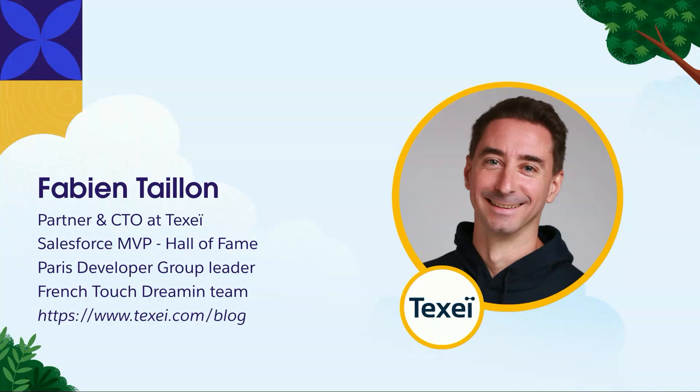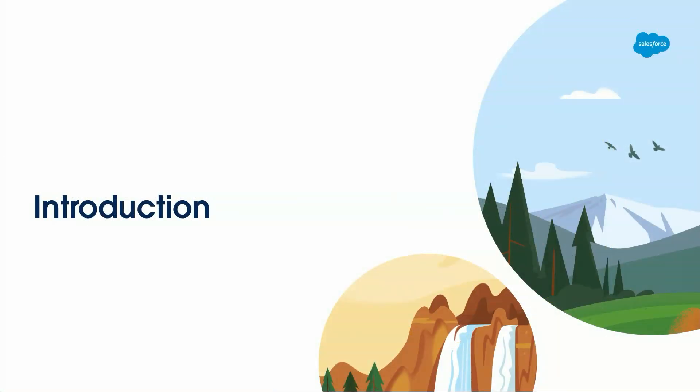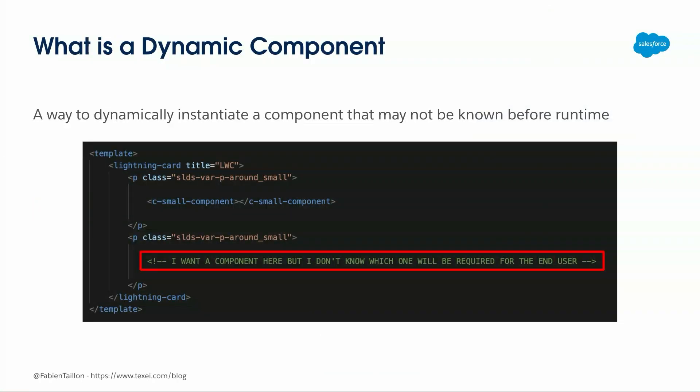We also have a blog post if you want to check out. So, what is a Dynamic Component? It's a way to instantiate dynamically a component when it's not already known when you build your own component. For instance, if we look at this simple example, you have a parent component with two components inside. The first is what we've done with LWC since the beginning — the child component is in the markup. But in the second part, I want a component but don't know which one it will be when building — maybe it will be set up later by the user.